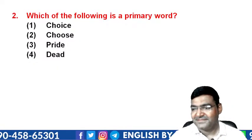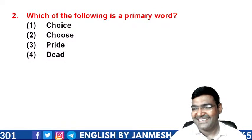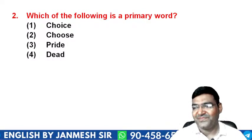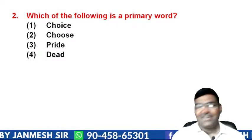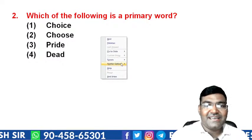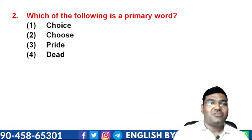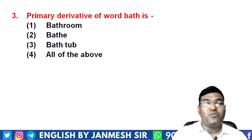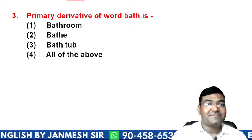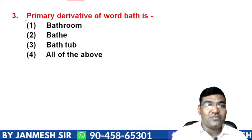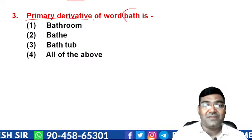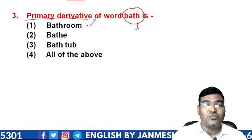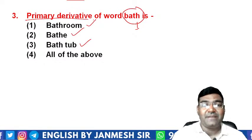Now let's look at the concept of a primary derivative. A primary derivative is the first word derived from a primary word by making a single small change. For example, from 'bath' (a noun meaning 'snan'), we add 'e' to get 'bathe' (a verb meaning 'snan karna'). That small addition makes it a primary derivative. So among 'bathroom', 'bathtub', and 'bathe', the answer is 'bathe' — option 2.